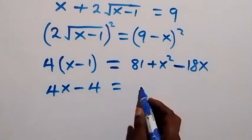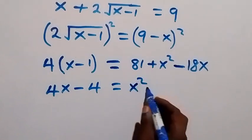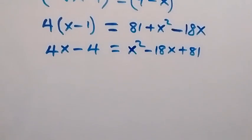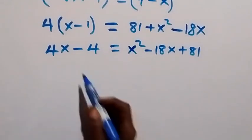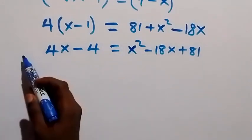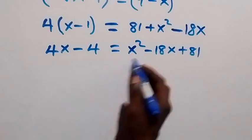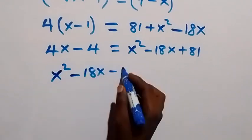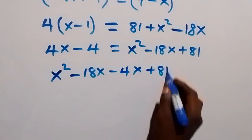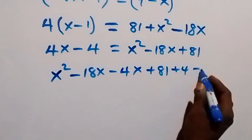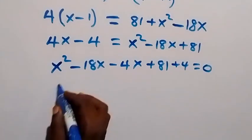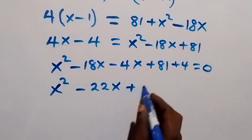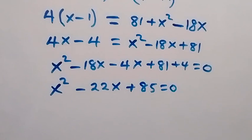Opening the bracket on the left gives 4x minus 4, which equals x squared minus 18x plus 81. Bringing everything to one side and rearranging: x squared minus 18x minus 4x plus 81 plus 4 equals 0, which becomes x squared minus 22x plus 85 equals 0.